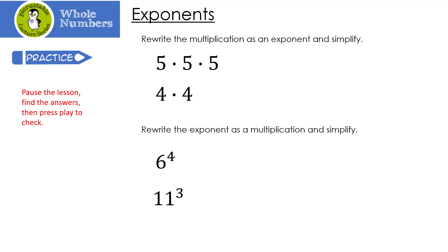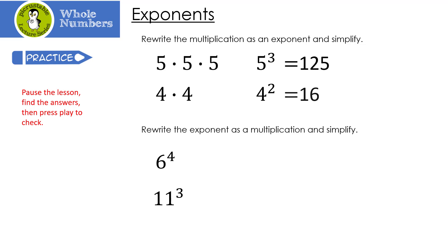Here are a couple for you to practice. Pause the lesson, find the answers, then press play to check. Let's see how you did. Five times five times five — our base is five and our exponent is three, because we're multiplying five three times. Five to the third power is 125. What about four times four? That's four squared, or four to the second power. That gives us 16.